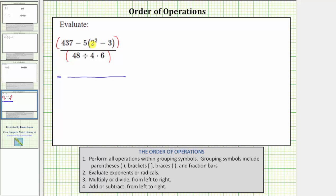Inside the parentheses, this simplifies to four minus three. And therefore, the numerator simplifies to 437 minus five times the quantity of four minus three.